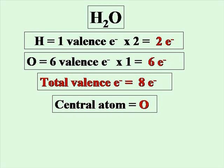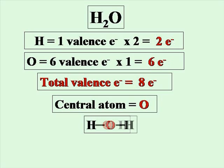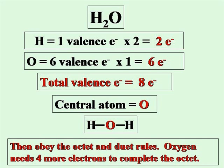The central atom will be oxygen, since hydrogen is written first but cannot be the central atom. Place the central atom, then place the two hydrogens on either side of it. Draw lines from the oxygen to each hydrogen to represent a pair of electrons shared between those two atoms. We then obey the octet and duet rules to complete the compound. Oxygen needs four more electrons to complete its octet, while each hydrogen is fine with its two electrons.